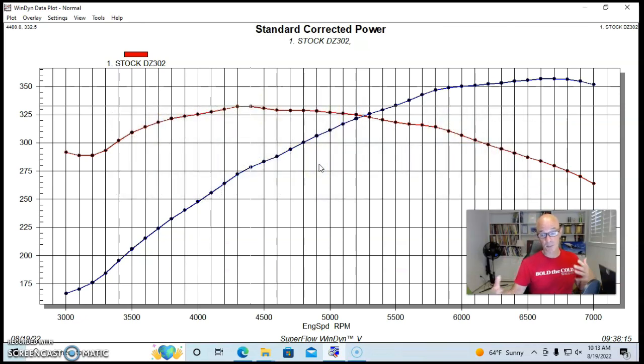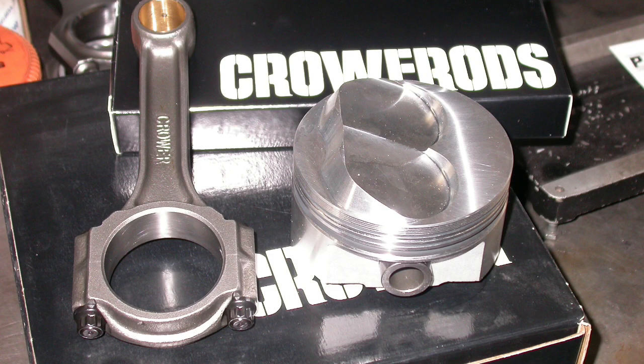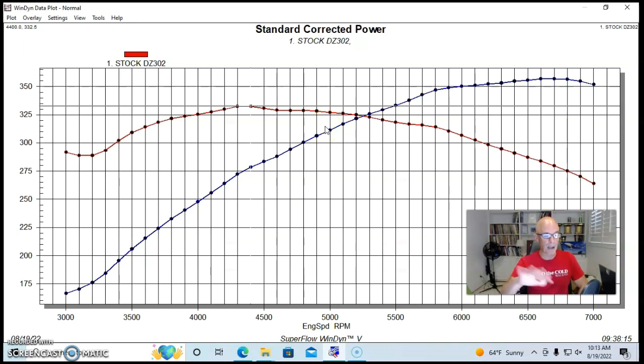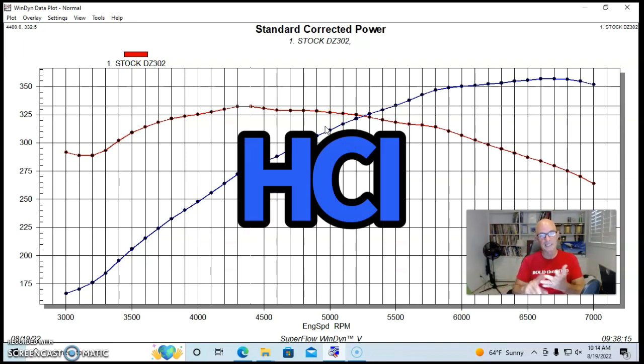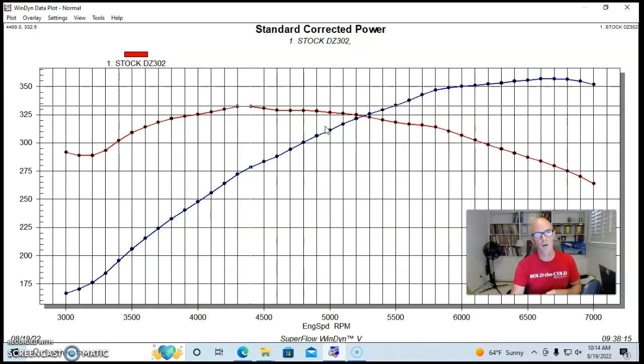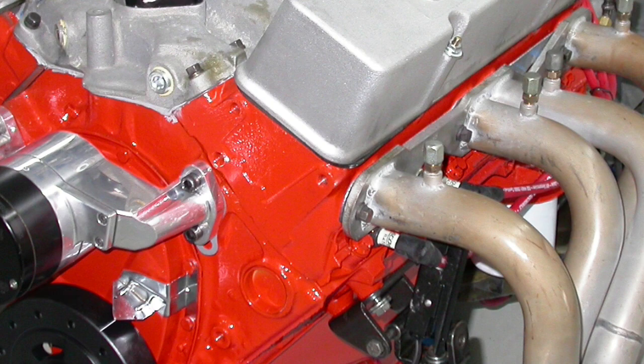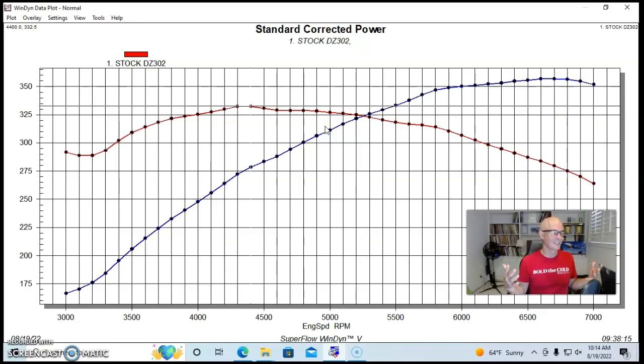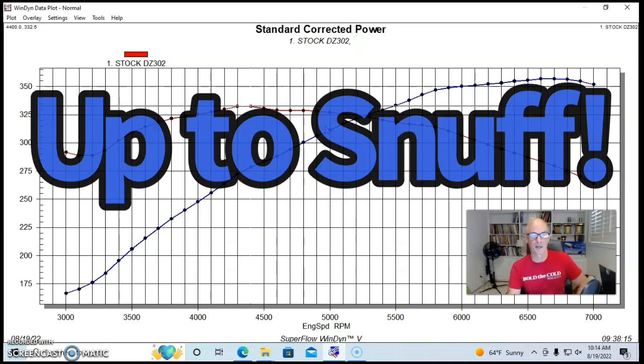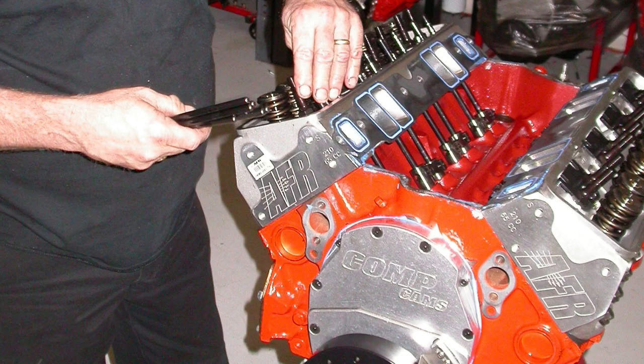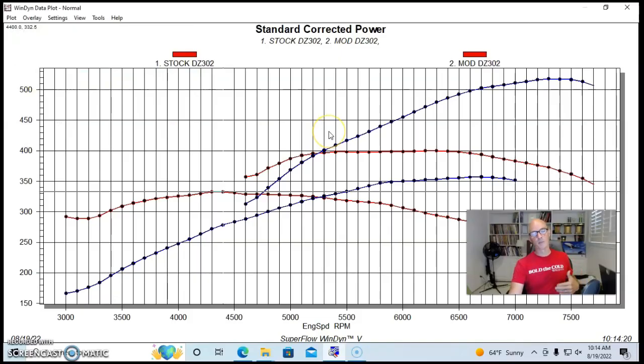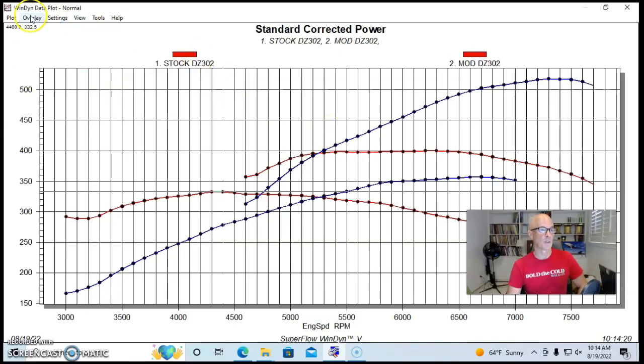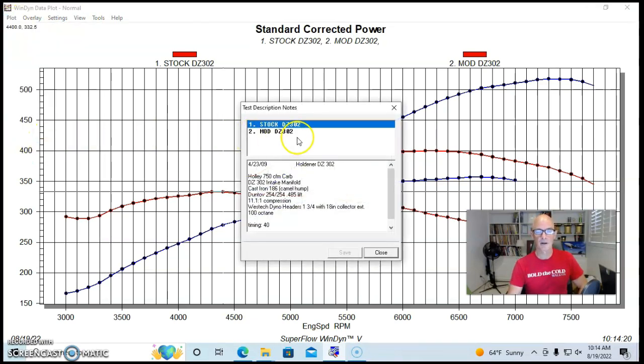What we did then to get it to produce 500 horsepower, which is a fairly big step up, we upgraded all the things that help it make power. Lucky for us, this DZ302 already had a good short block. It already had forged pistons in it, 11 to 1 compression. So what we did was change the power producers. And by that, I mean, basically the heads, cam and intake manifold that helped determine how much power, because one of the things really holding this thing back were the fueling heads, as good as they were back in the day. They're just not up to par compared to more modern stuff. So what we did was we put a set of airflow research heads on it.